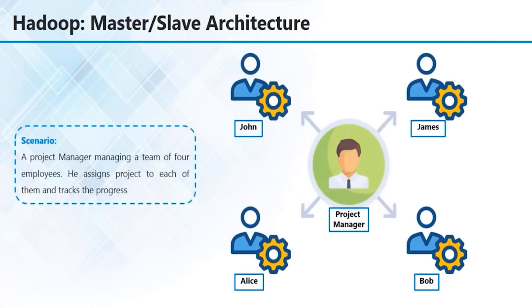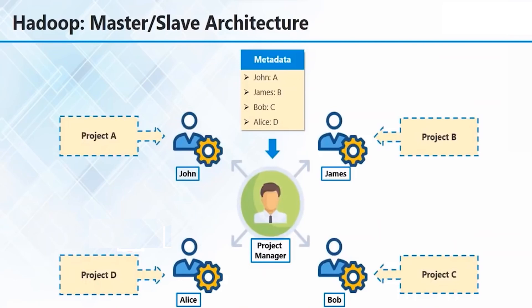The project manager distributes the projects he gets from a client across his team members and tracks how the work is going on from time to time. The project manager got four projects — A, B, C, and D — and assigned them across the team: John got project A, James got project B, Bob got project C, and Alice got project D. Everyone is working on a different project and the work is going on fine.